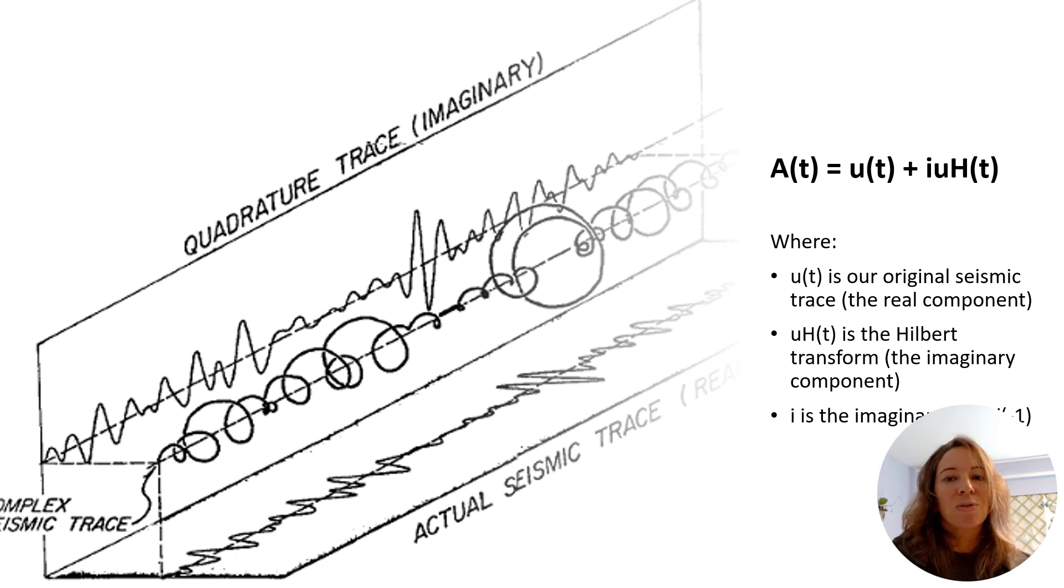We can look at the Hilbert transform with a little bit more detail. At its core, it's a mathematical operator that shifts the phase of all of the frequency components of a signal by negative 90 degrees, or negative π over 2 radians, while maintaining their amplitudes.